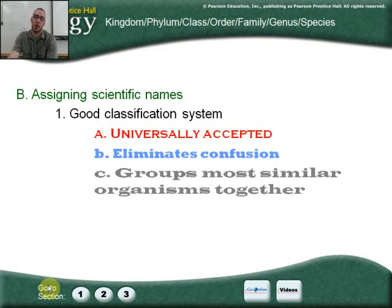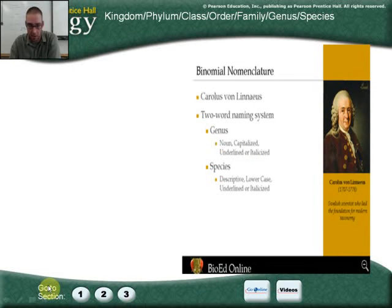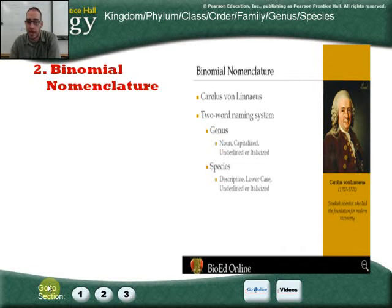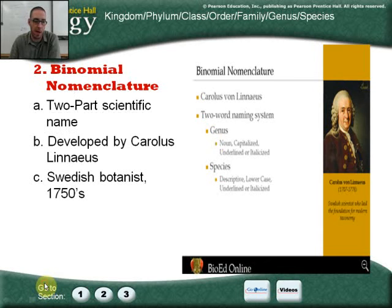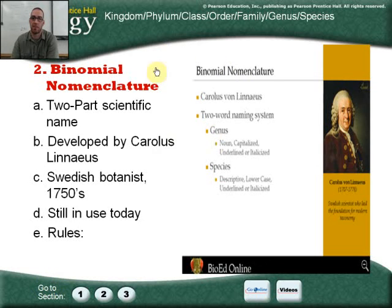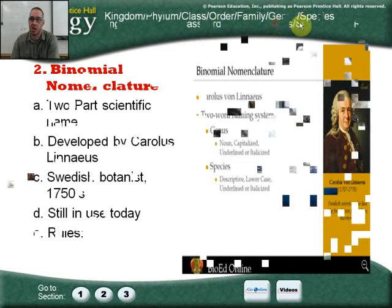It groups most similar organisms together, and as we move through this, you'll see it groups those most closely related in evolutionary classification. Carolus Linnaeus came up with binomial nomenclature. He developed the seven taxons — kingdom, phylum, class, order, family, genus, species — and established that the genus is capitalized and the species is in lowercase. If it's not in italics, you underline it. Basically in the early 1800s, he came up with this taxonomy that follows those rules.